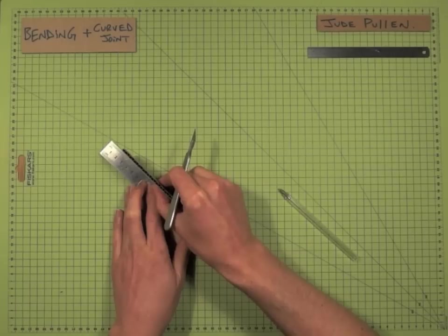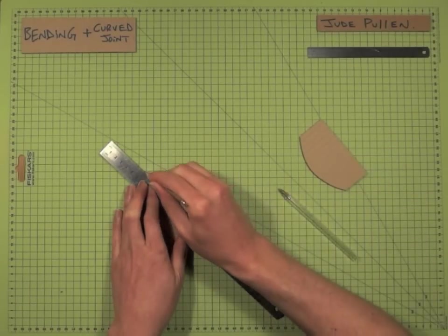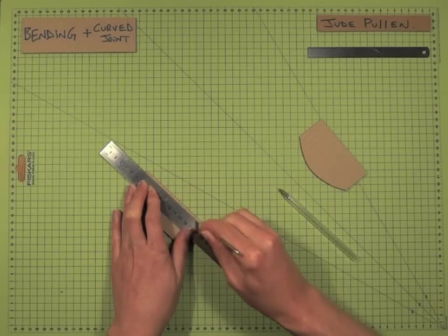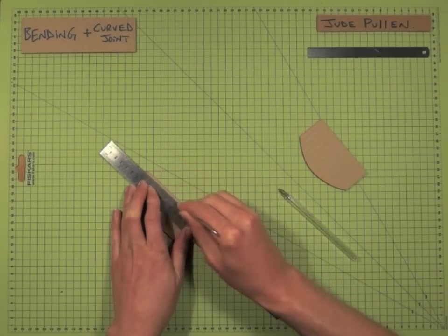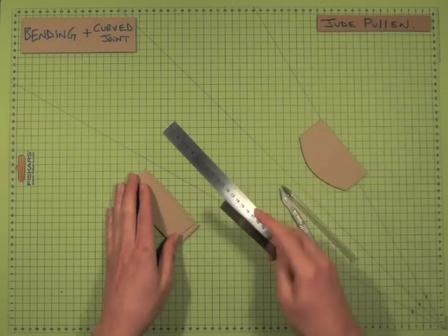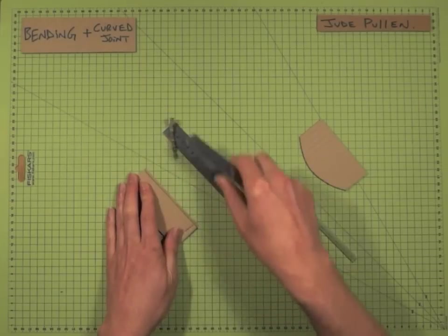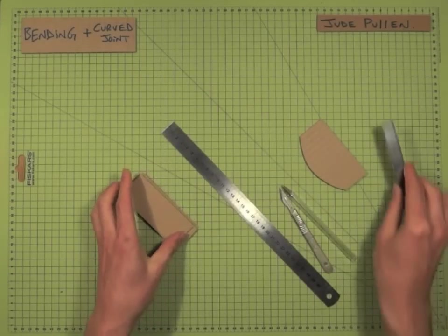So if we just use that to measure up approximately, and cut through, and again, take a small ruler just to get rid of the corrugations that we don't want.